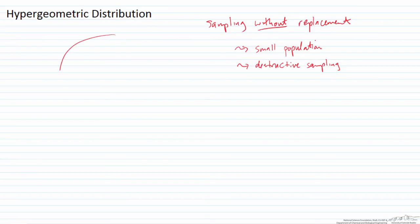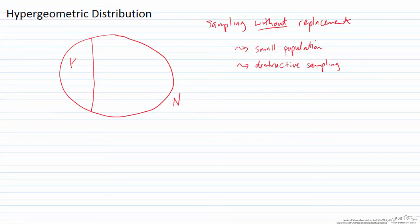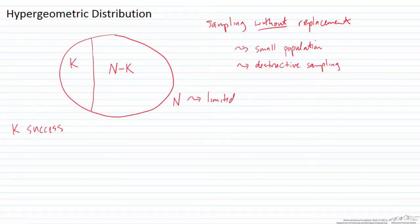The hypergeometric distribution applies when you have a population of limited size — call that capital N. Of those N items, capital K have some characteristic, which I'll refer to as a success, though in some cases K could represent failures. So we have K successes and N minus K failures, which combined give us our population of size N.